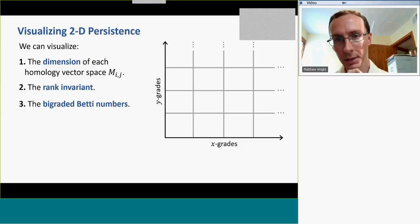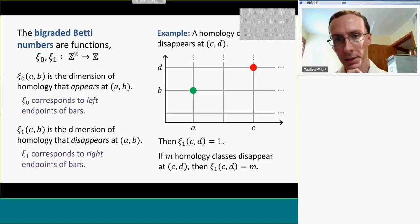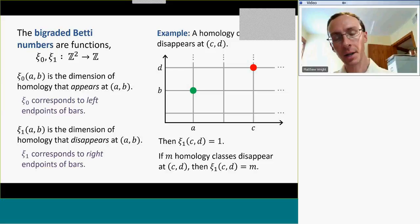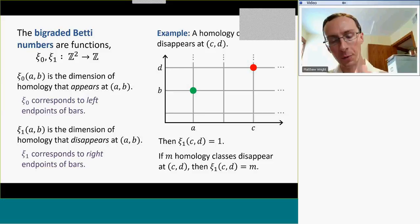Audience member: This would be counting the number of classes that die, not having anything to do with the dimension of the class that dies, right? Speaker: Yes, right. That's a good point. In the software that I'm about to demonstrate, we're only looking at one dimension of homology at a time. So if you had to consider all dimensions of homology, I would have to specify the graded Betti numbers for each homological dimension as well. Got it. Excellent. Thank you.